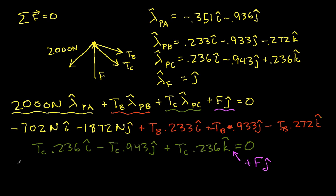So let's see where the i-hats are. We'll do i-hat in orange. We have this guy here, so we have minus 702 newtons. We have this guy here, plus TB.233. And we have an i-hat here, plus TC.236. And this is equal to 0.